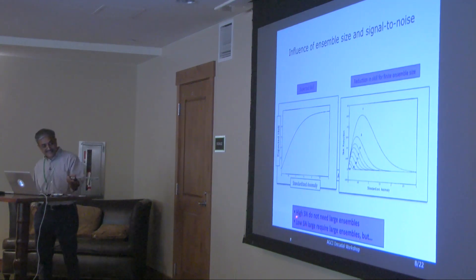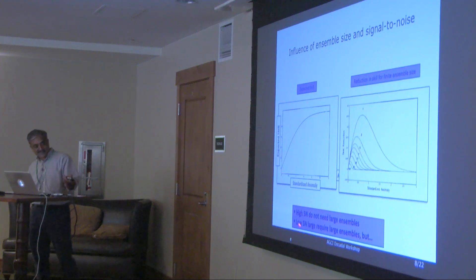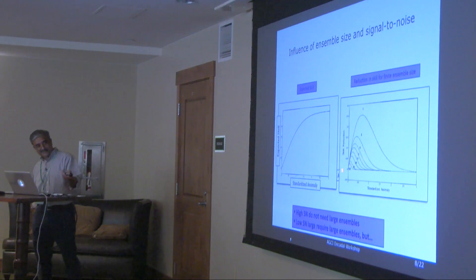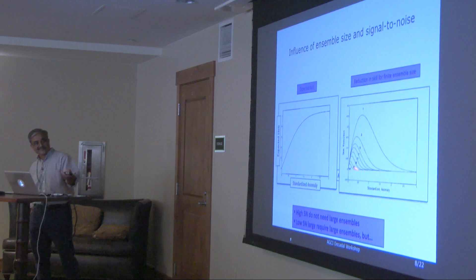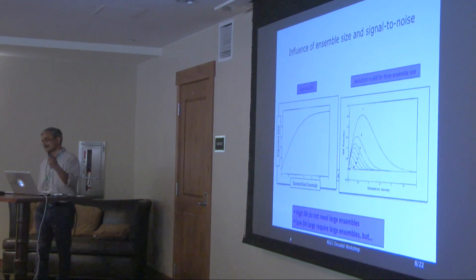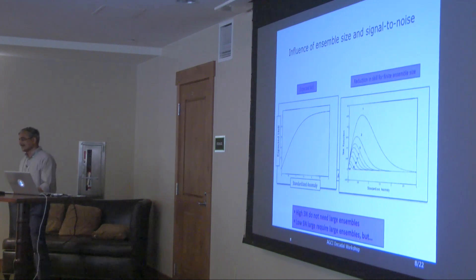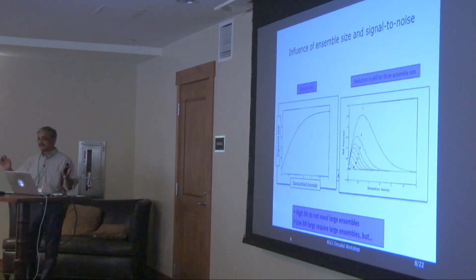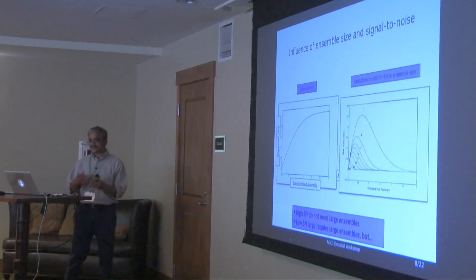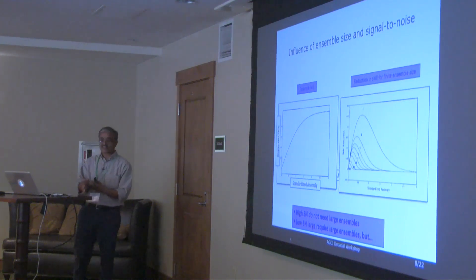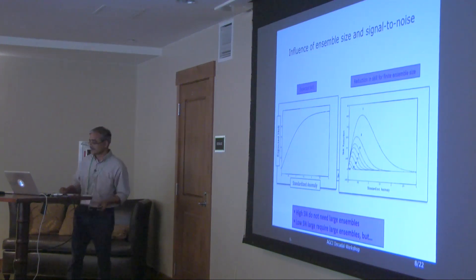The key message is: for high signal-to-noise, when skill is already high, you don't need a very large ensemble. For low signal-to-noise, you require a larger ensemble — skill does improve as you increase ensemble size — but you're sitting in a region where skill is very low to begin with. You can put in a lot of effort with a very large ensemble but still only approach a skill limit that is itself very low.